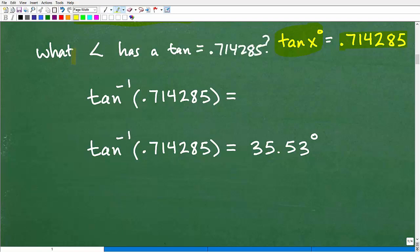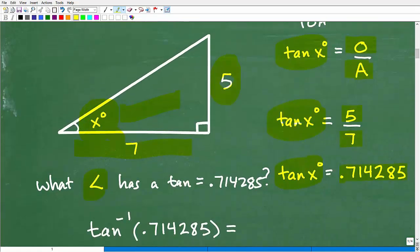Because if I can find that angle, right? What angle has a tangent that's equal to 0.714285? Because this angle here, I'm like, mystery angle, I know you. I don't know your actual angle measure yet, but I do know that your tangent is 0.714285. So I'm going to figure you out. What I'm trying to answer the question is: what angle has a tangent equal to 0.714285?